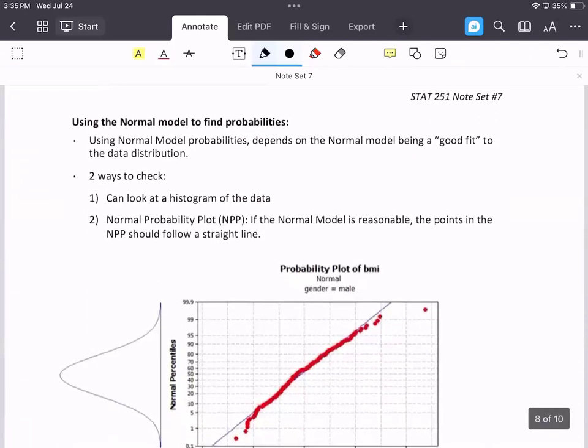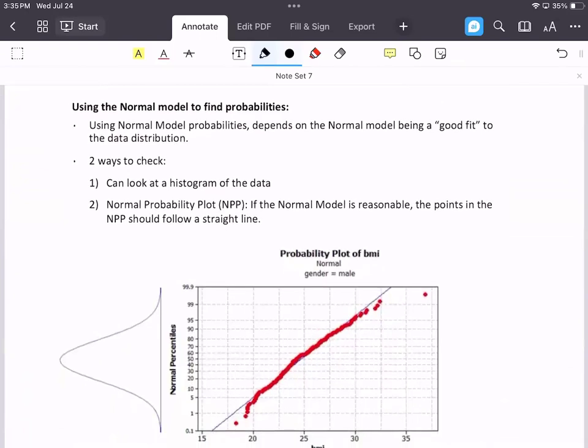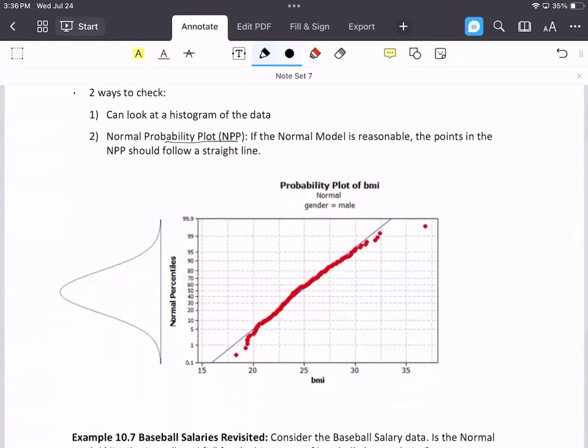The last part of this note set is really leading into stat 252, but I'm going to do a quick intro here and I'll tell you the keys that you'll need to know for any exam. We can use the normal model in certain circumstances. We can be told to use the normal if it's a good fit, or we can be told to use the normal model, or if we want it to be a good fit to actually use the normal. You can look at the histogram of the data, and if it roughly is normal, you're in pretty good shape. Or you can also look at the normal probability plot. If the normal model is reasonable, the points in the normal probability plot should be roughly a straight line, which this is. So using the normal model would make sense.